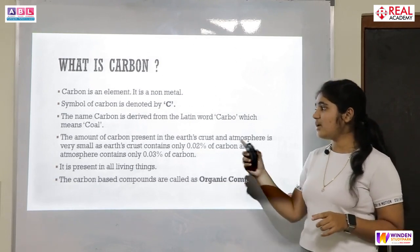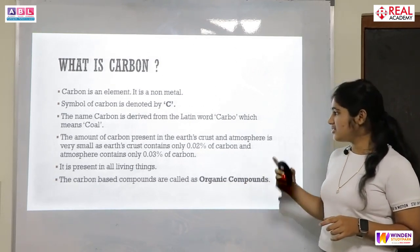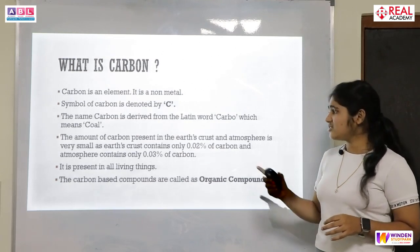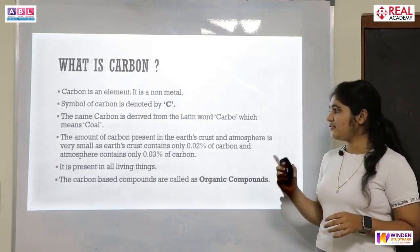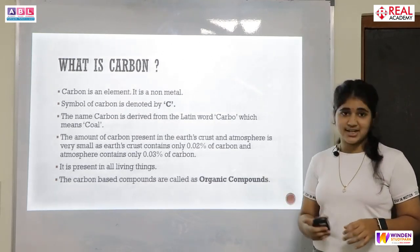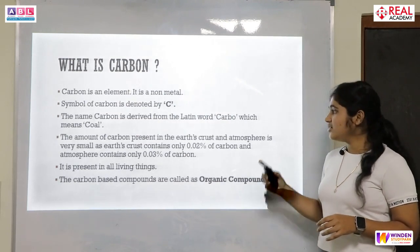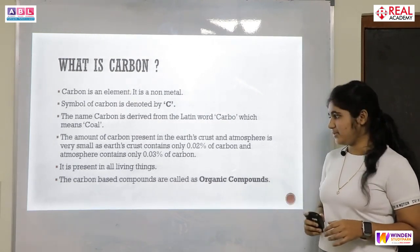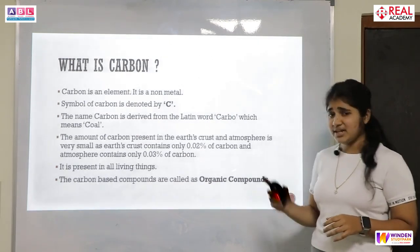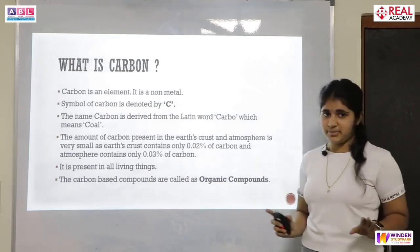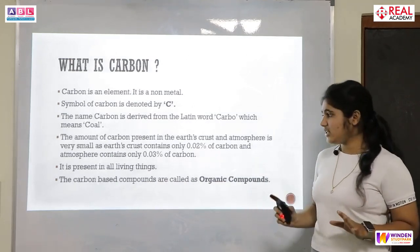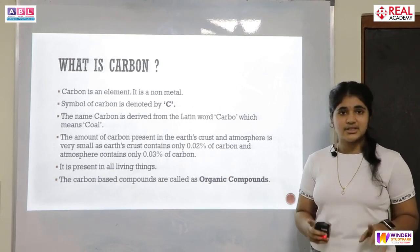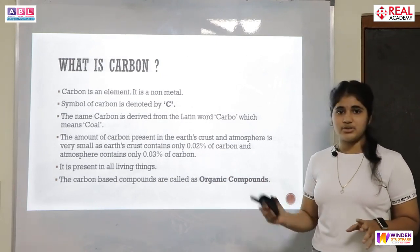The amount of carbon present in the earth's crust and the atmosphere is very small — only 0.02 percent of carbon is present in the earth's crust, and the atmosphere contains only 0.03 percent carbon. But carbon is present in every living being, and the compounds that are based on carbon are called organic compounds.